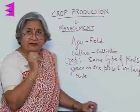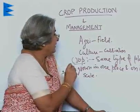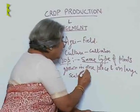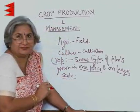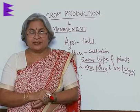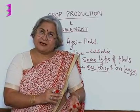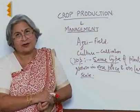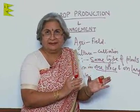Whenever you are defining, remember there are some key expressions. In this case, the key expressions are: same type of plant, grown in one place, and on a large scale. So if you just grow a few plants at your backyard or in your kitchen garden, we can't call it a crop. Or if some plants are of wheat and some of another type, then also it's not a crop. So a crop is grown in a field — a large area.